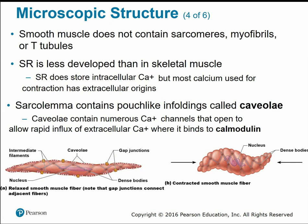In smooth muscle, calcium binds to calmodulin rather than troponin, but the effect is similar — allowing contraction to occur. Because smooth muscle myofilaments are arranged diagonally, when cells contract they do so in a corkscrew manner, unlike the longitudinal straight-line contraction of skeletal muscle.